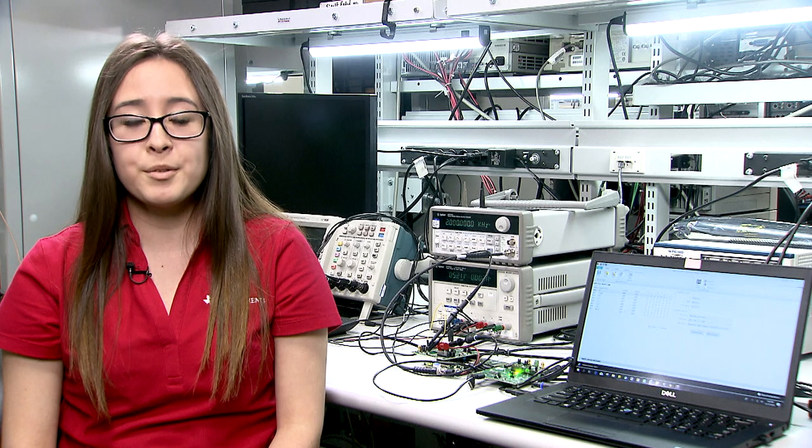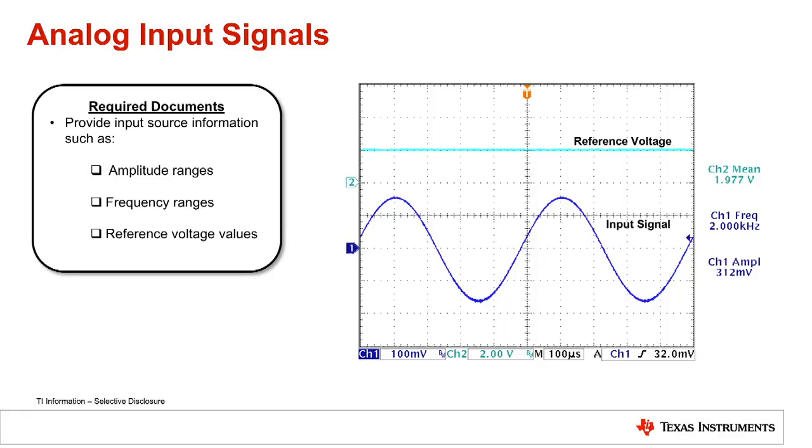In this video, we will be reviewing the effective documentation that will help drive TI's investigation to potential root cause in an analog signal chain. In the Analog Input Signal section, TI requests for customers to provide the input source information, such as reference voltage, frequency, and amplitude range. It is suggested to provide values using an oscilloscope instead of a digital multimeter when possible.